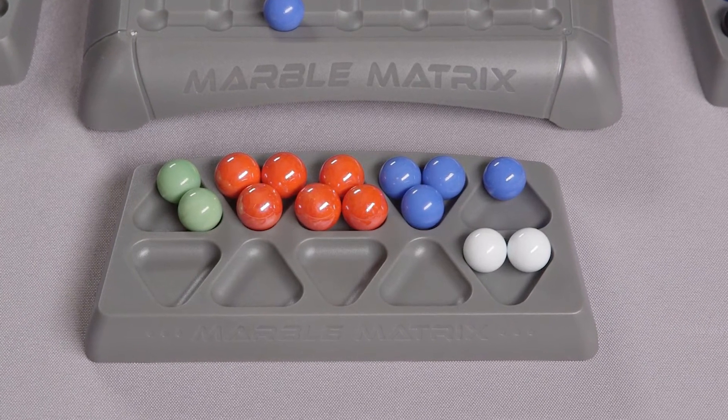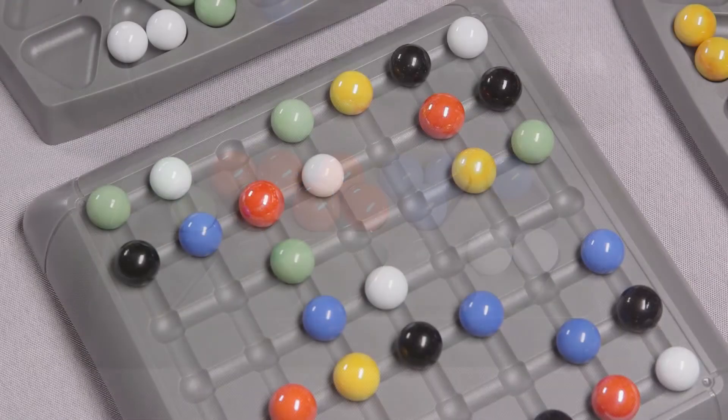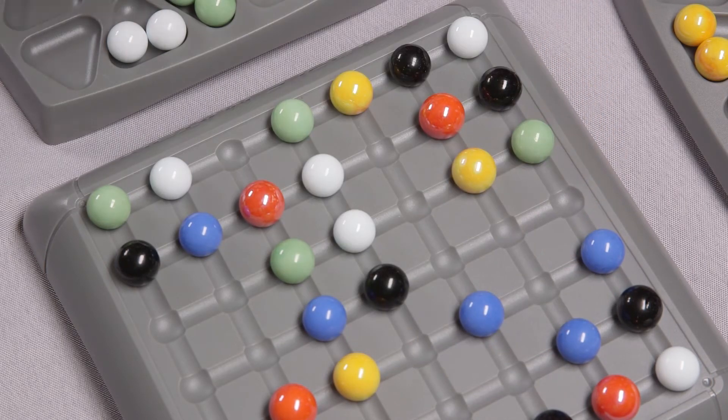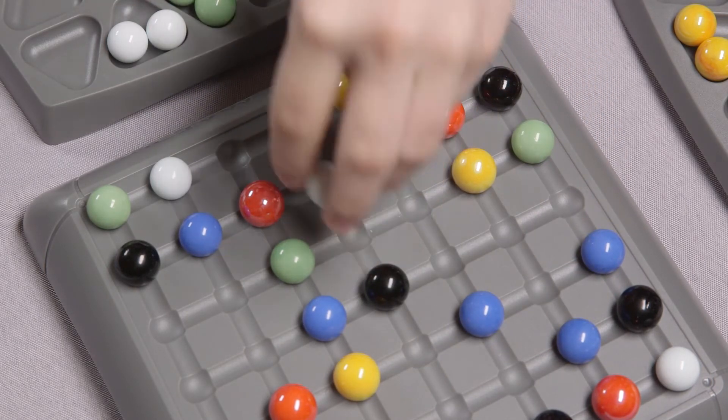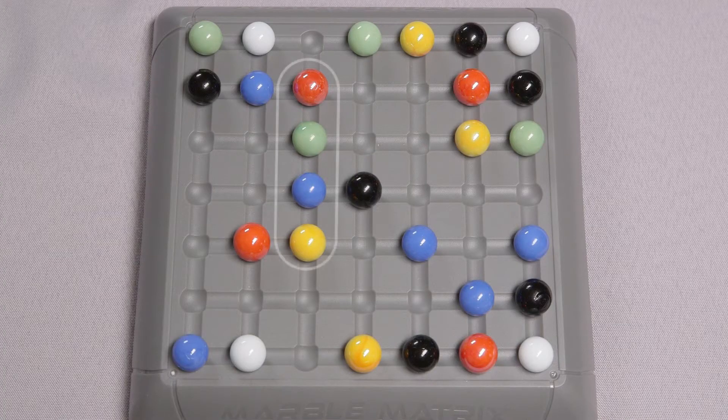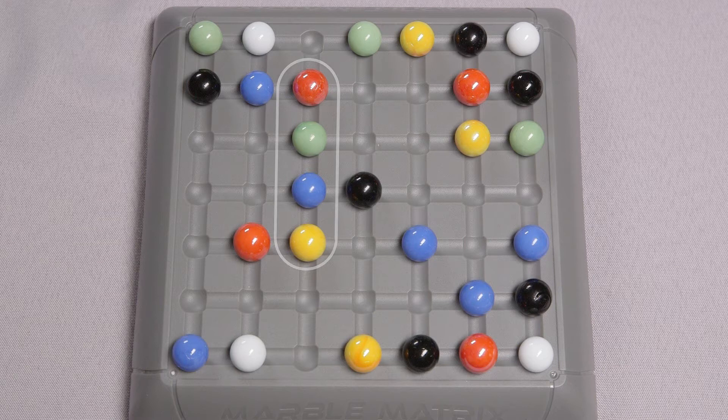On your turn, study the matrix grid and slide one row of marbles either vertically or horizontally across the board to create one or more sets of matching marbles. A row is defined as a group of consecutive marbles on the same line without any gaps between them. A single marble can be considered a row.